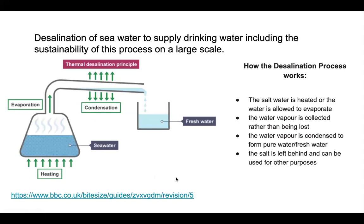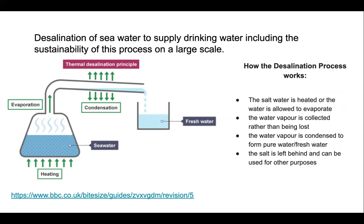Finally, we can touch on the desalination of seawater to turn it into drinking water. As you can see here, seawater is heated and then passed through a tube, which is then cooled. The water becomes steam and is then cooled to form liquid water. In doing so, the salt is left at the bottom because salt has a very high boiling point, whereas water boils at 100 degrees. So the salt stays at the bottom and you get fresh, clean water ready to be drunk.